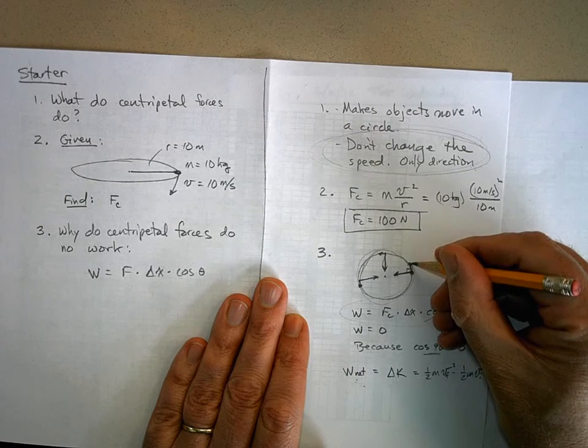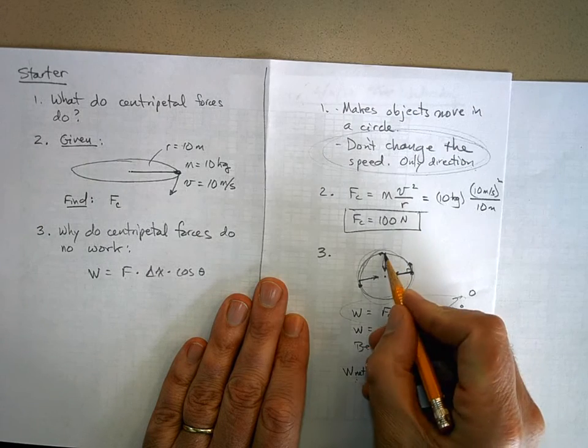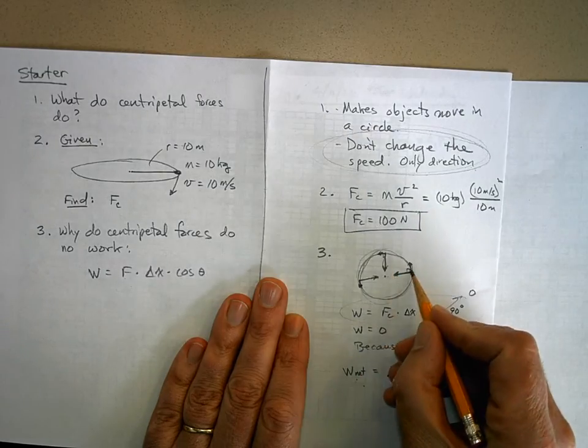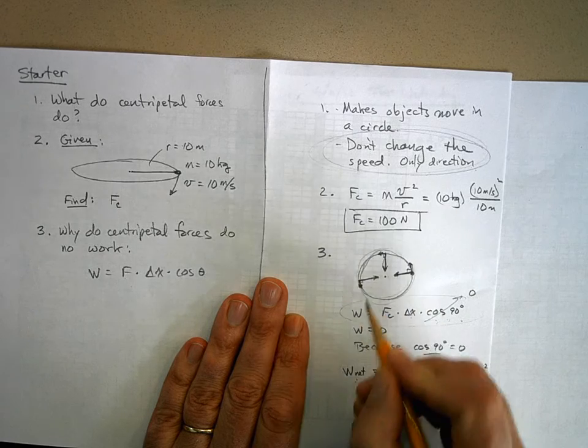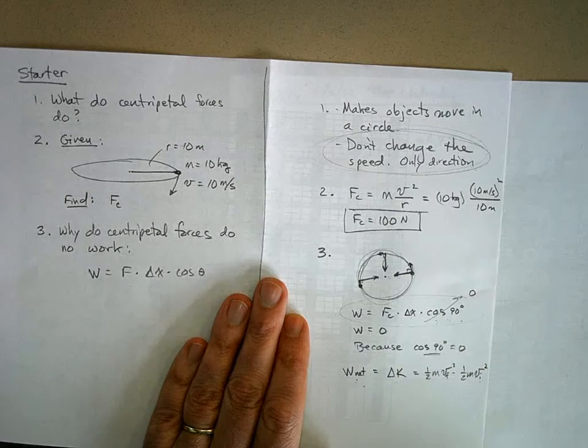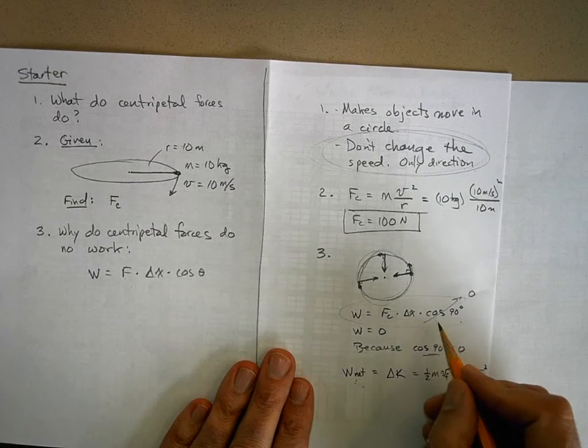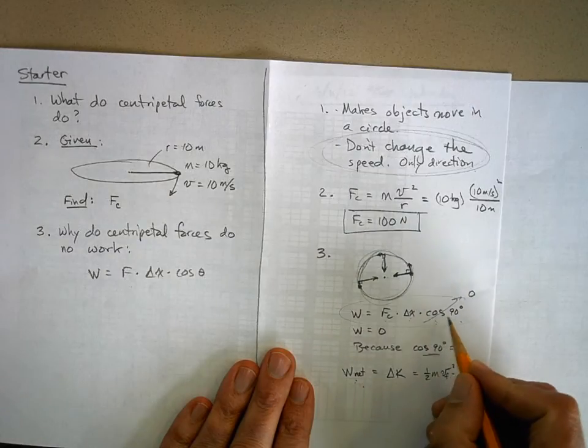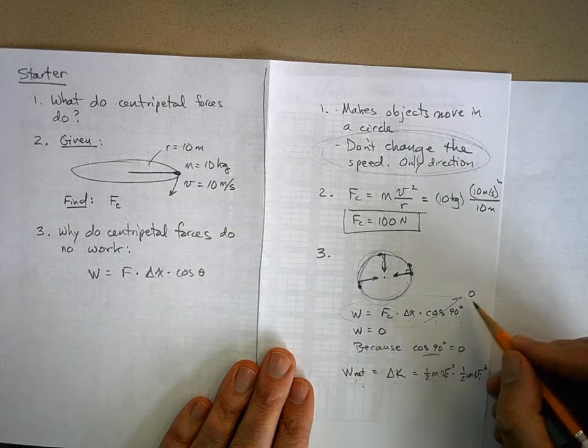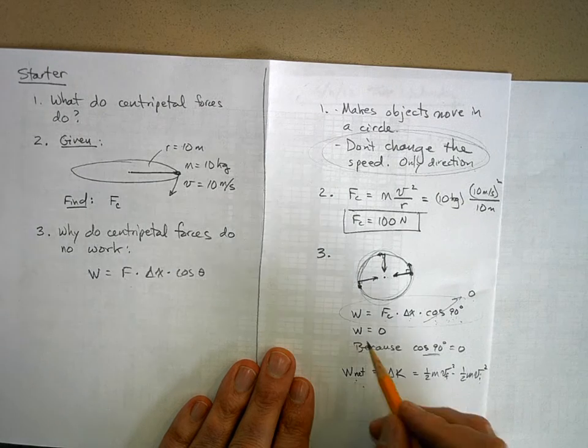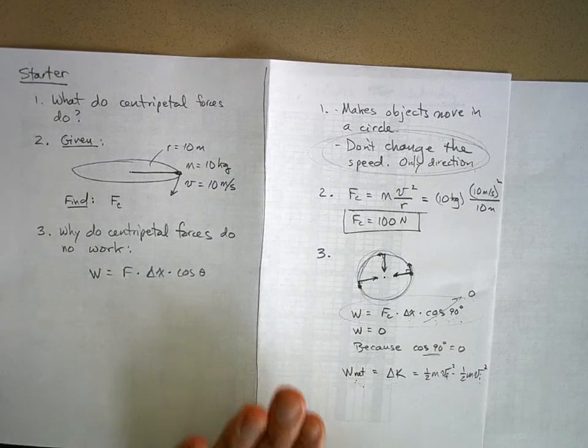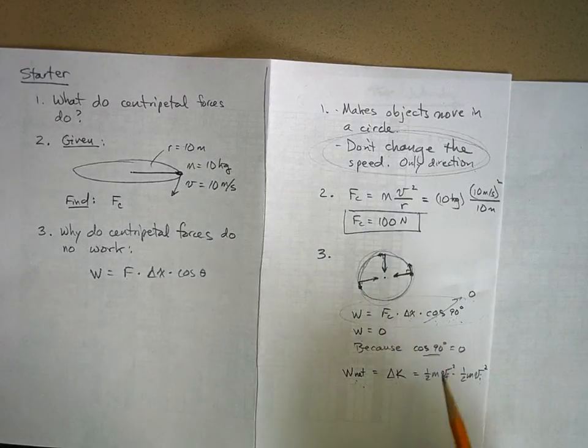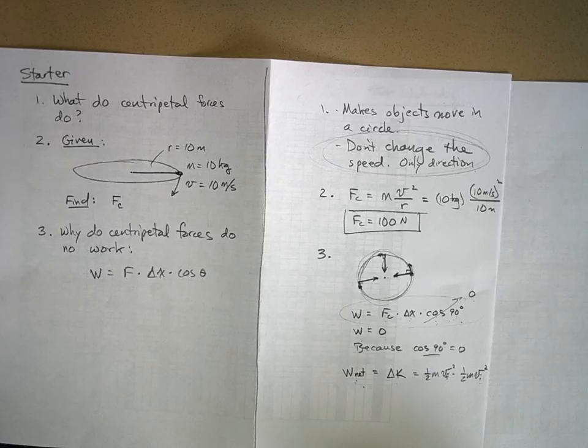But if you look right here, it's displacing in this direction. If you look over here, it's moving in this direction, displacing in that direction. And those are always 90 degrees apart. The force and the displacement are always 90 degrees apart, which means that the angle between the force and the displacement is 90 degrees. And so what's the cosine of 90 degrees? It's zero. So therefore work must be zero. It's because that angle theta is 90 degrees.